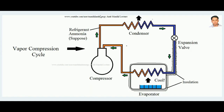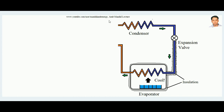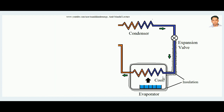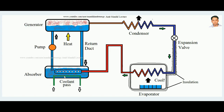From the vapor compression cycle, the compressor part is removed. In the vapor absorption system, aqua ammonia based, instead of the compressor there is a generator-absorber system. In the absorber, ammonia coming out from the evaporator is mixed with cold water. Since ammonia is highly soluble in cold water, it dissolves there. This mixture is called a strong solution.